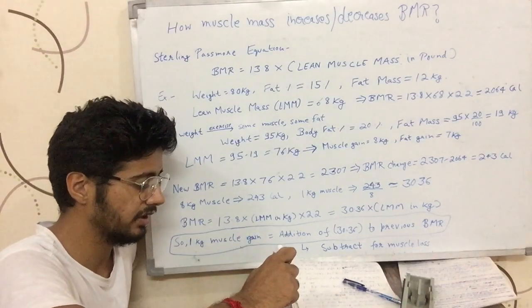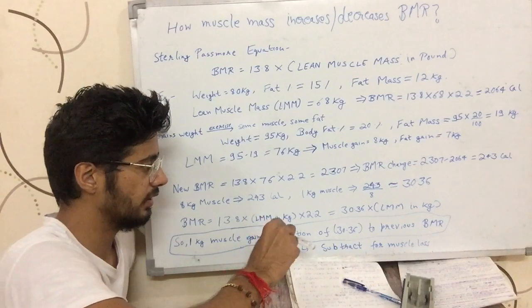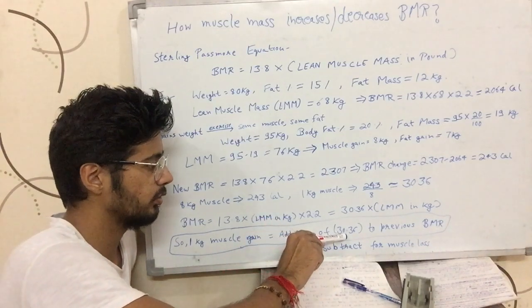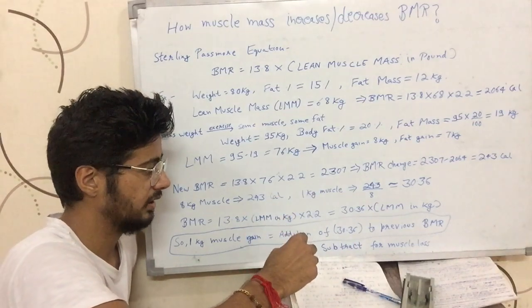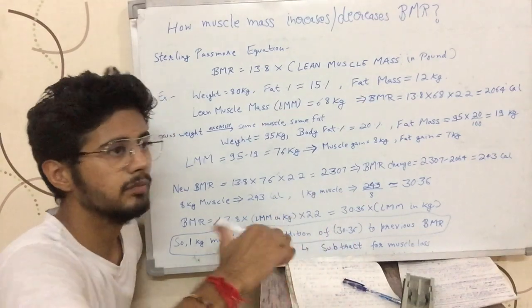For example, your BMR is 1,500 and you gain 1 kilogram of muscle. Your new BMR would be 1,500 plus 30.36. If you lost 1 kilogram of muscle, your new BMR would be 1,500 minus 30.36.